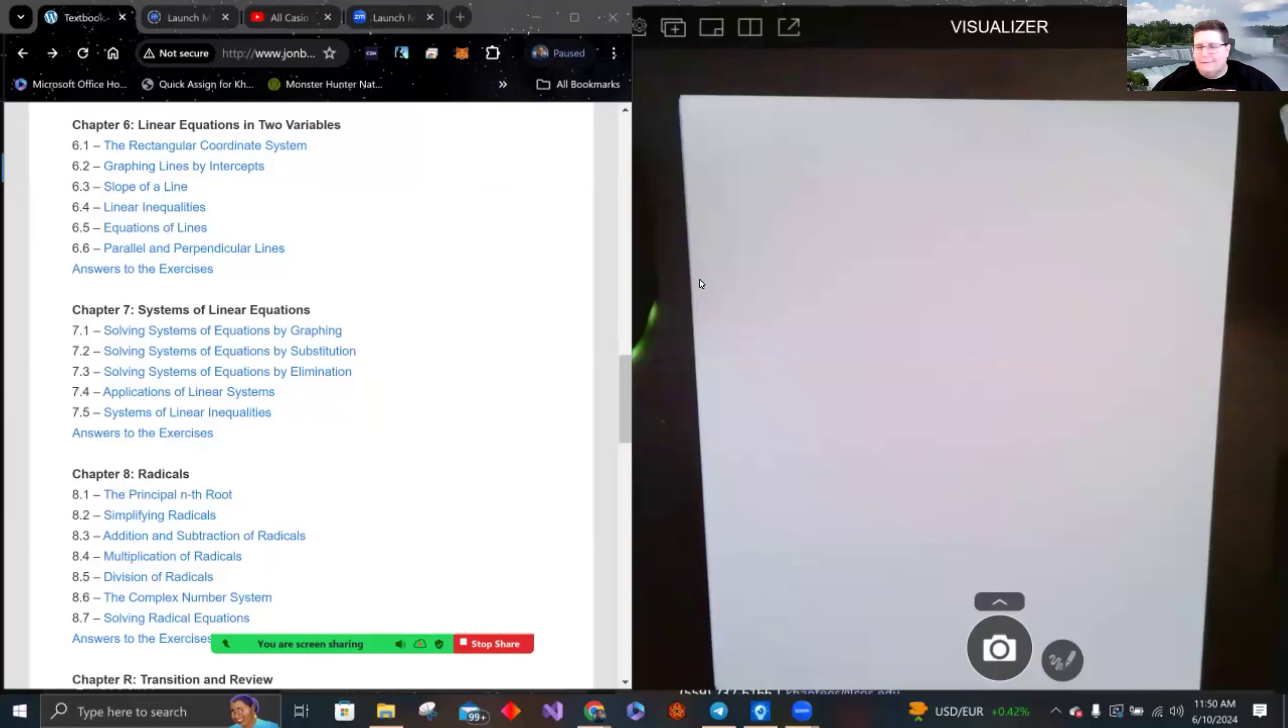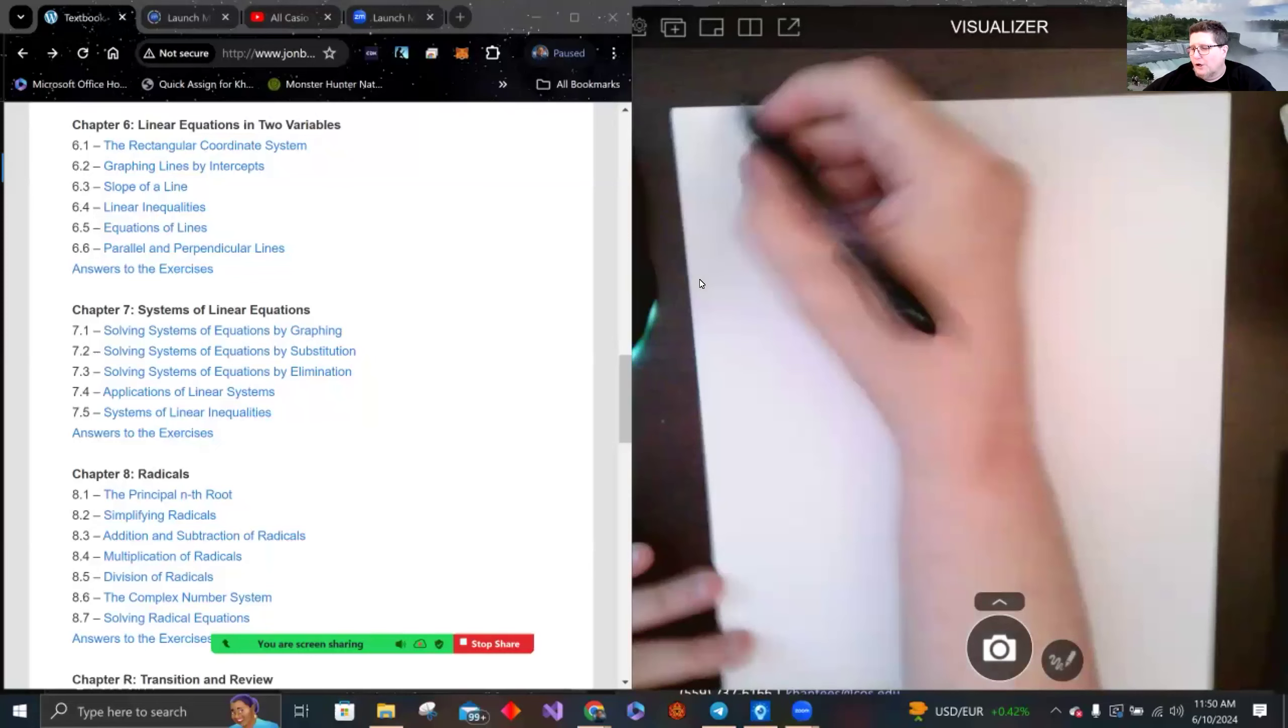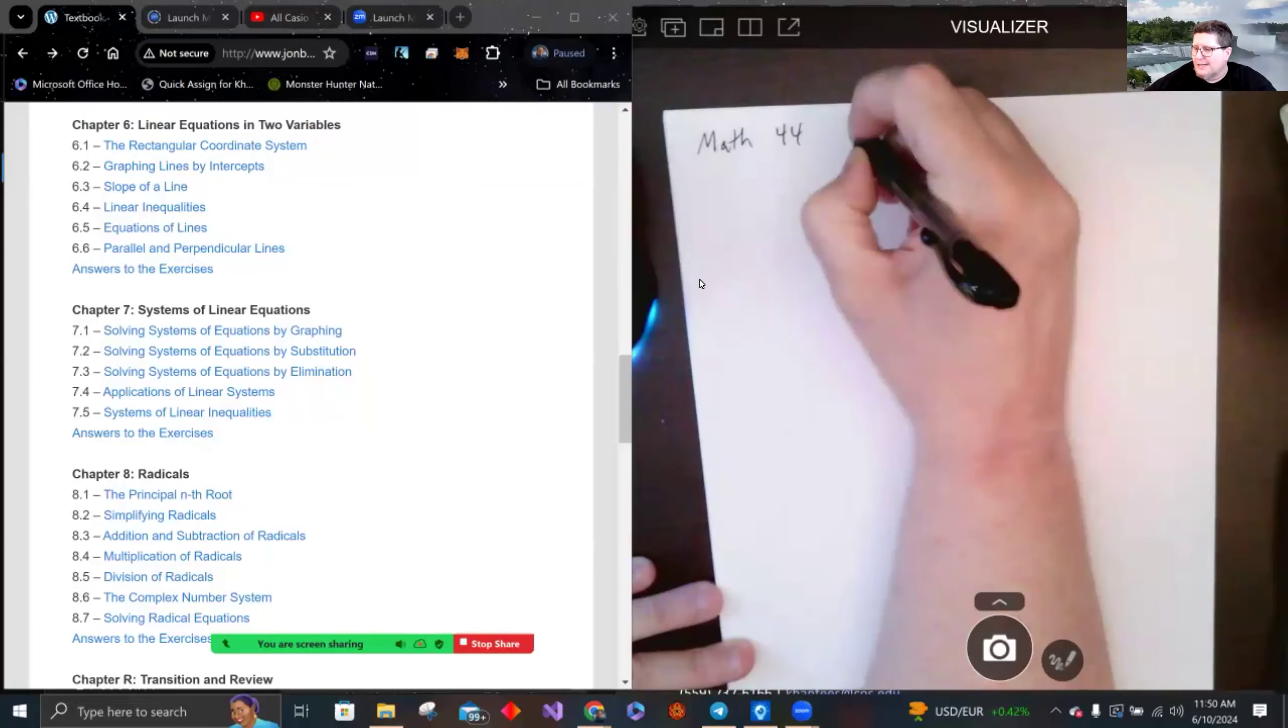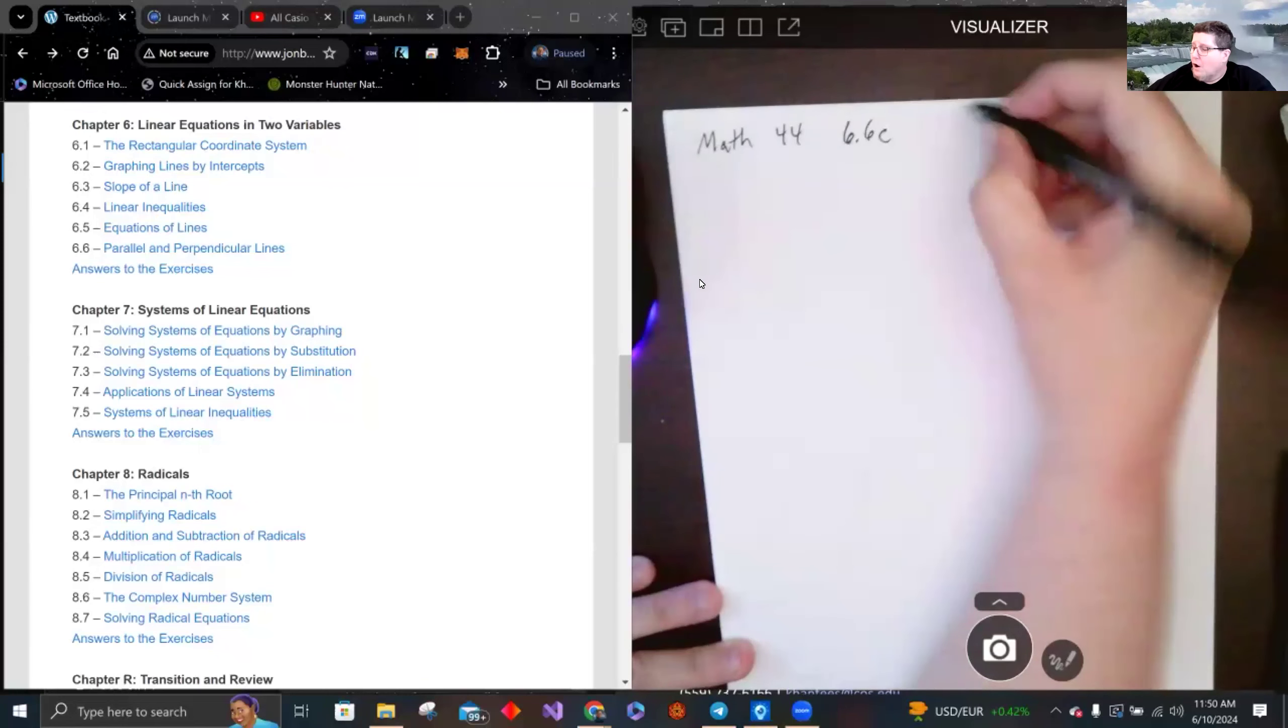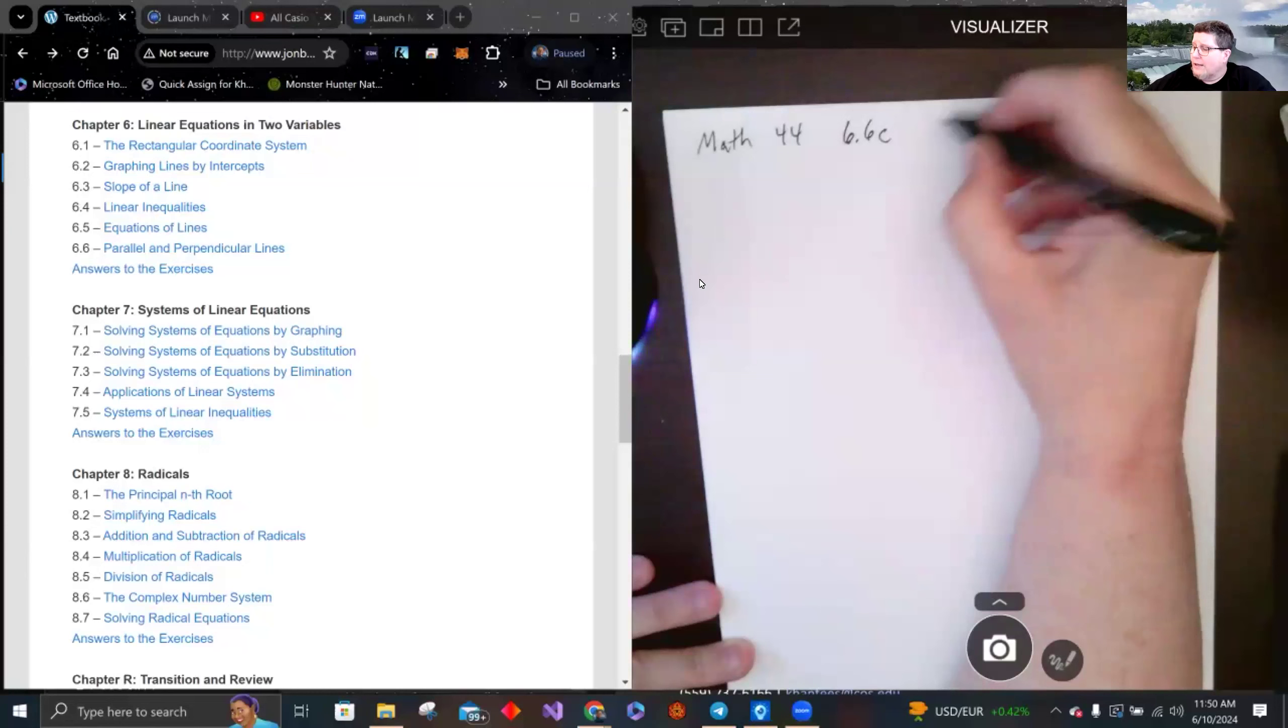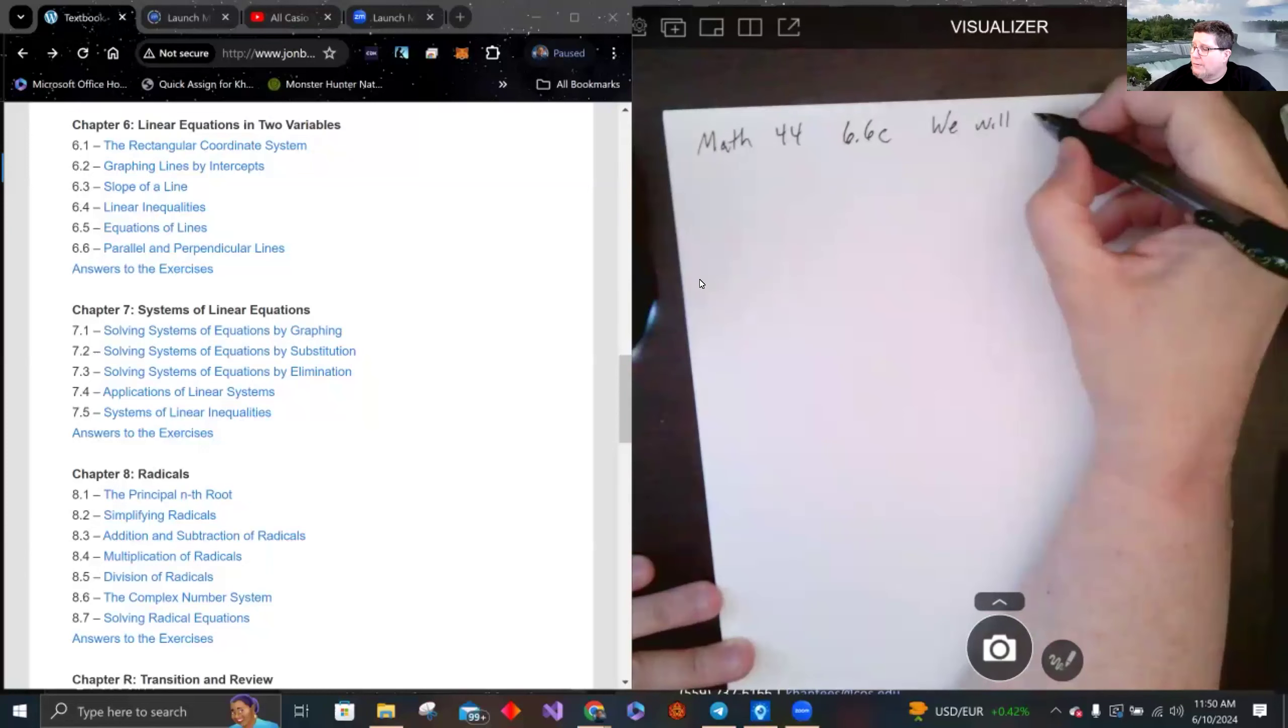Hey there everybody, welcome back. Final video for chapter six. This is 6.6C. What we're looking at is we will have a triangle, and we will check if a triangle is a right triangle.